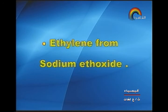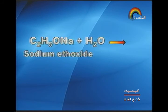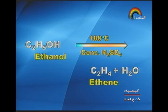Next point: ethylene from sodium ethoxide. Sodium ethoxide with water gives ethanol and sodium hydroxide. Then ethanol with concentrated sulfuric acid at 180°C gives ethylene and water.